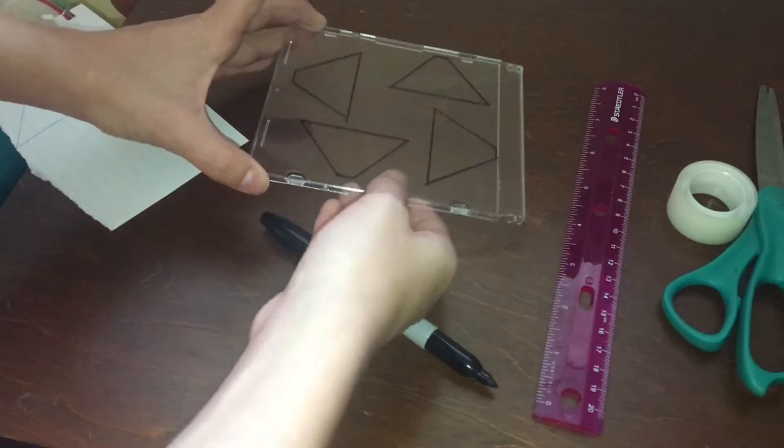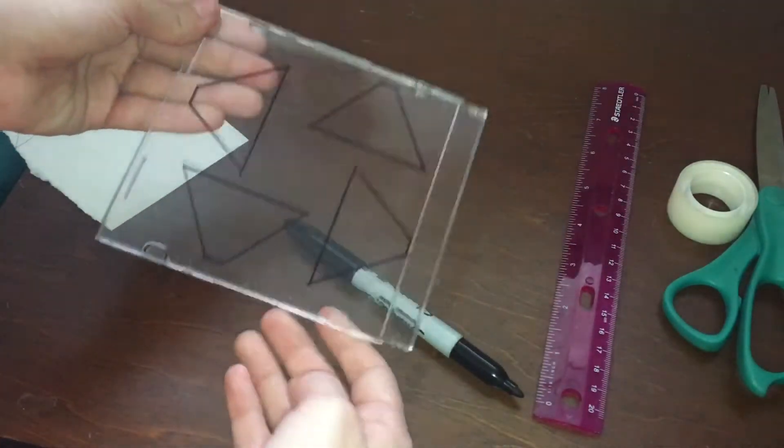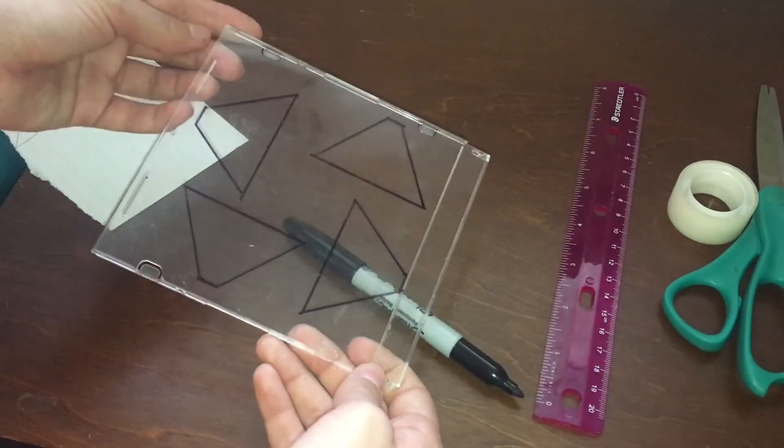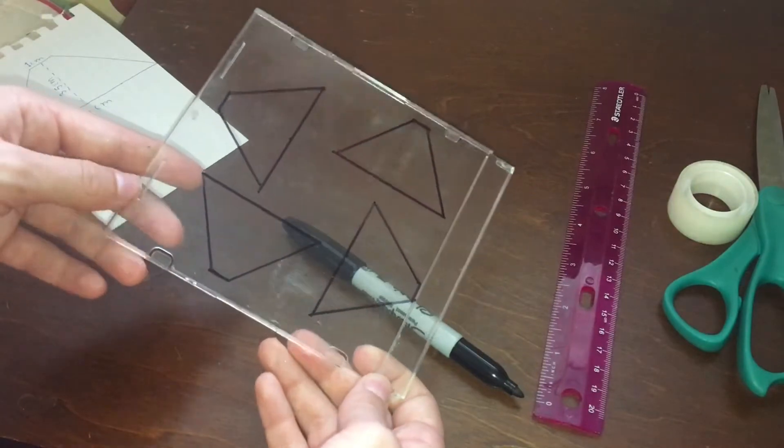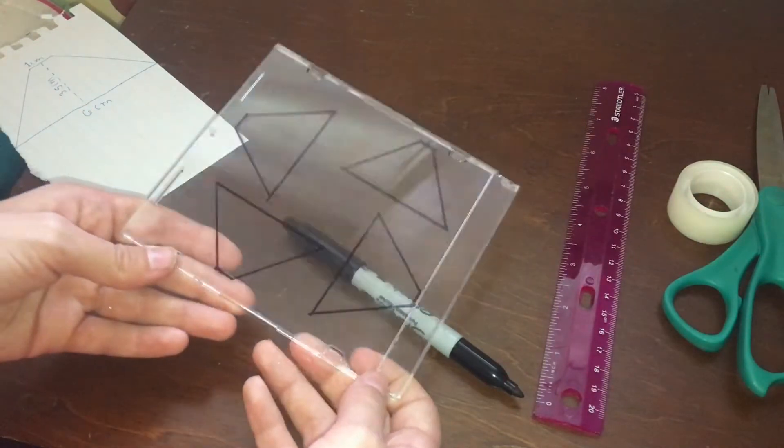So I finished drawing my trapezoids and I'm going to cut them out. Hopefully it won't be too hard. Bella looked like she struggled cutting them out.